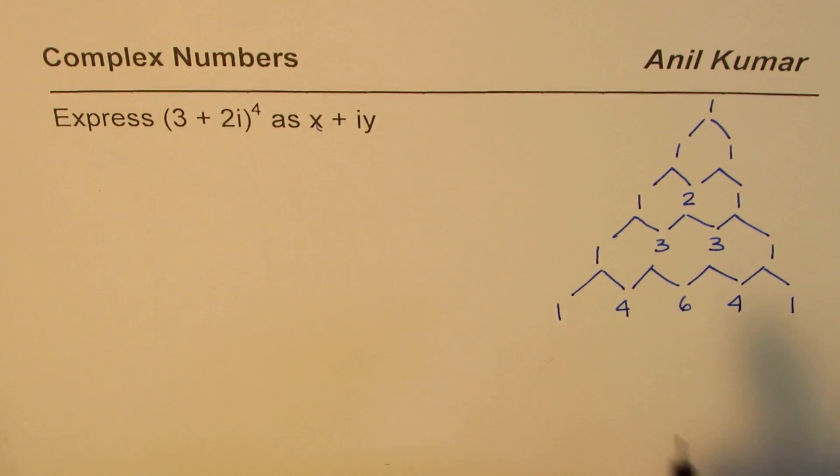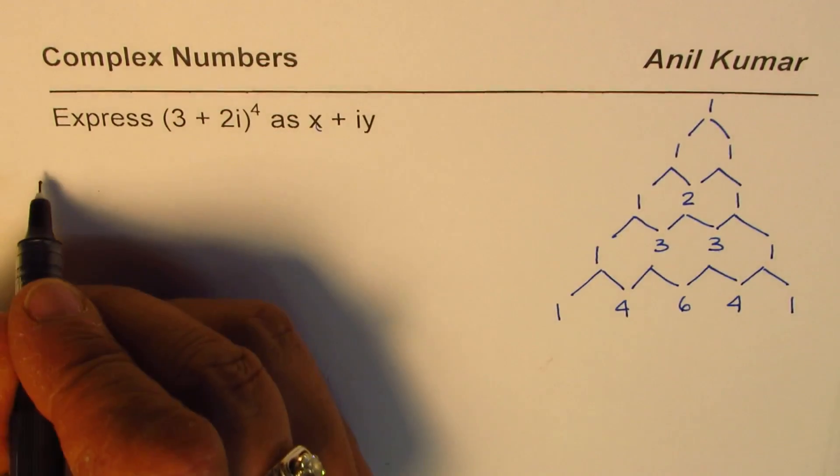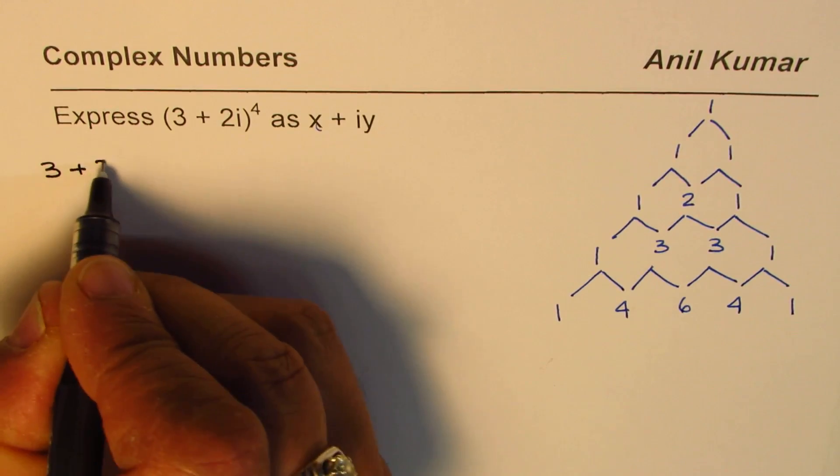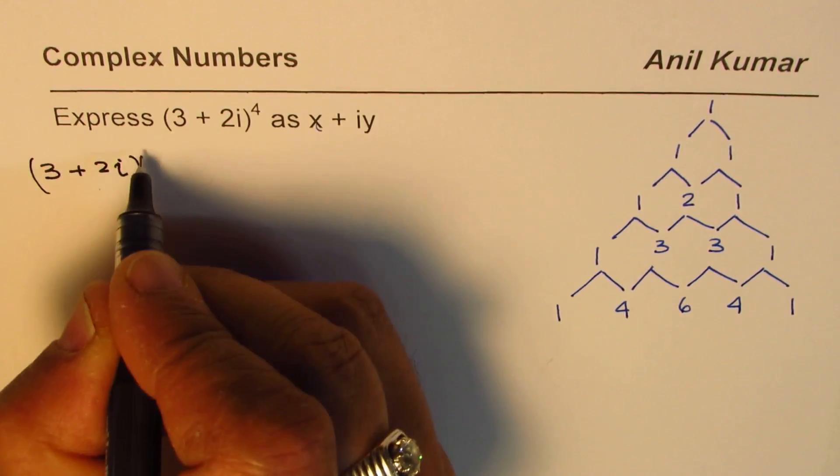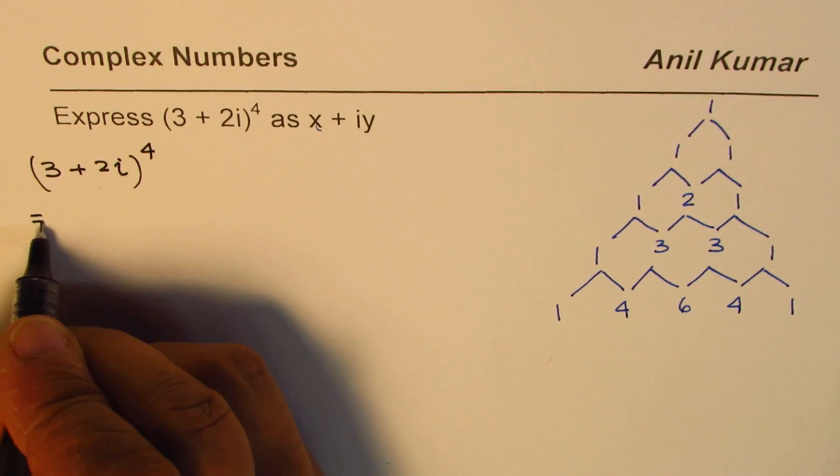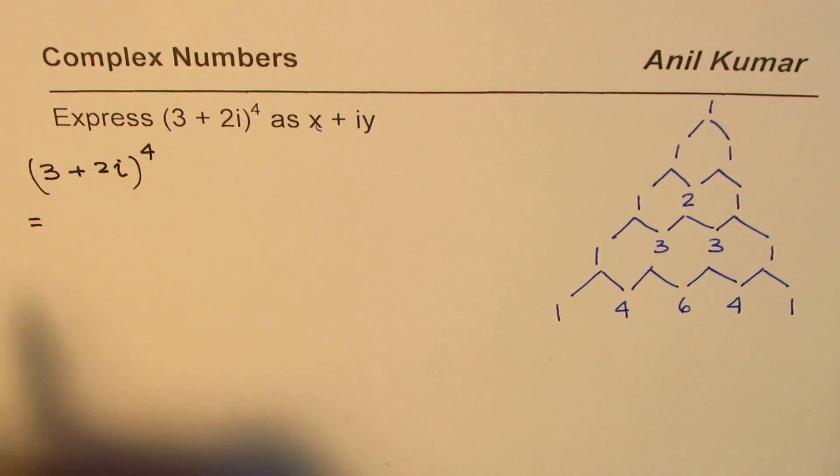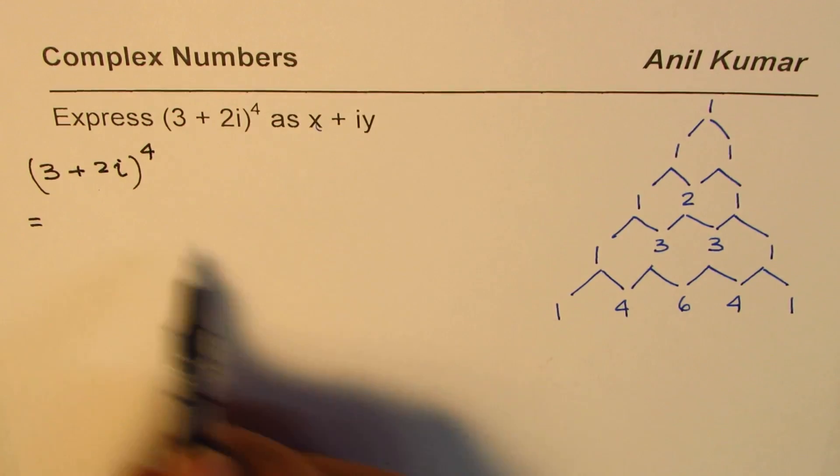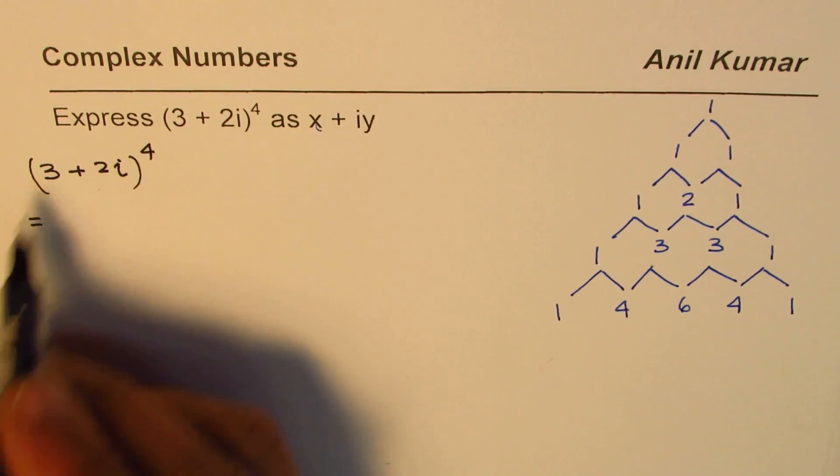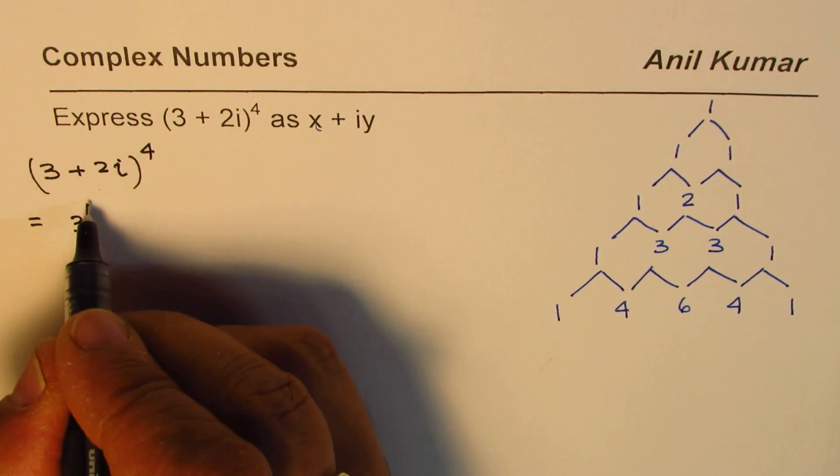We will have five terms. We could write 3 plus 2i to the power of 4 as equal to: the first term is 3, the second is 2i. The coefficient will be 1, powers will sum to 4, so I could write this as 3 to the power of 4.